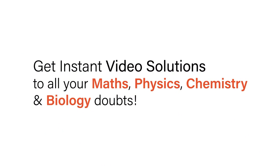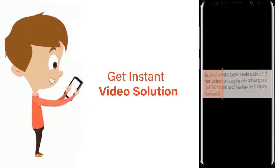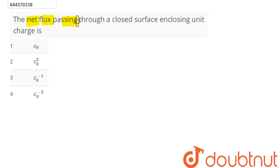With Doubtnut, get instant video solutions to all your maths, physics, chemistry, and biology doubts. Just click the image of the question, crop the question, and get instant video solution. Download Doubtnut app today. Question is: the net flux passing through a closed surface enclosing unit charge is?